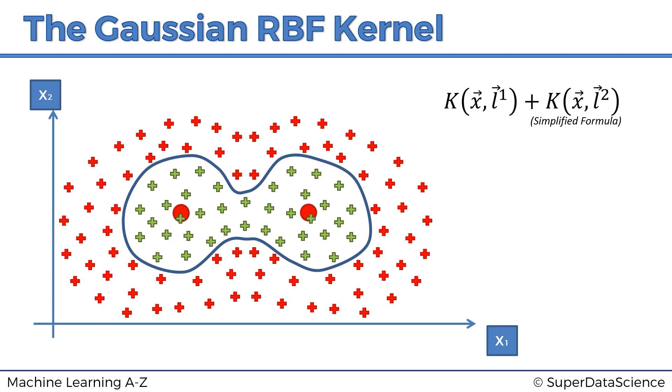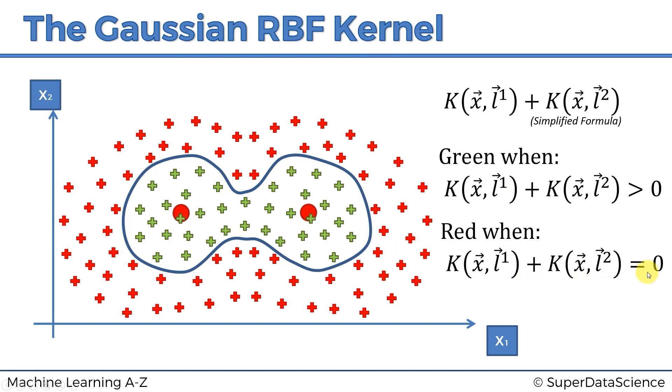The formula here would be: the point is assigned to the green class when this equation is greater than zero, and the point is assigned to the red class when this equation is equal to zero. This is a very simplified example; in reality, it's greater than or equal to zero versus less than zero because we have the coefficients. It is a bit more complex mathematically, but we don't really need to go into those depths. The point is that we understand we can create this non-linear, very complex decision boundary without having to go into a higher dimensional space. Everything is still happening in those same dimensions, simply because we're applying the kernel functions, and that is why this method is called the kernel trick.